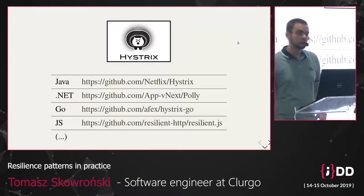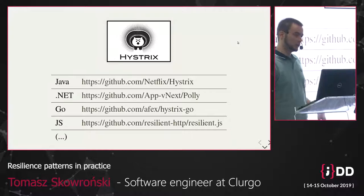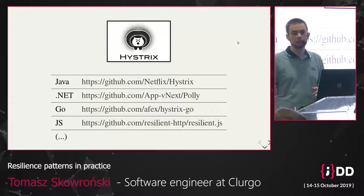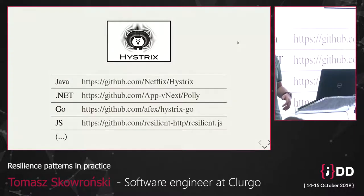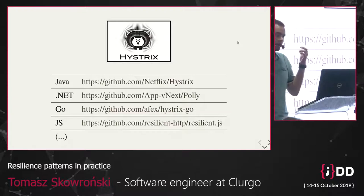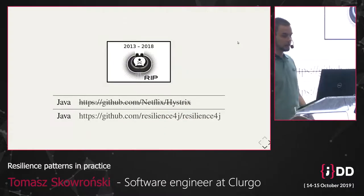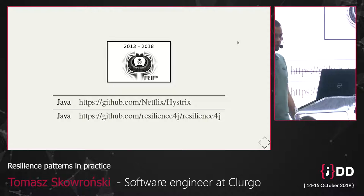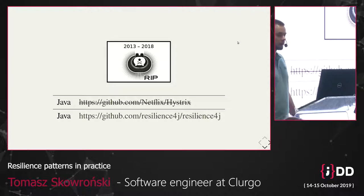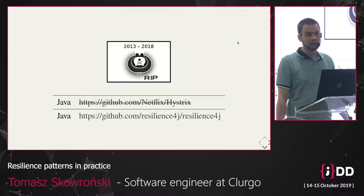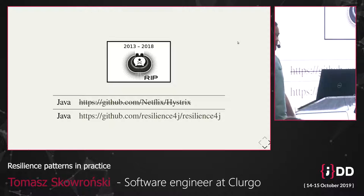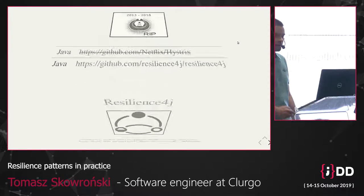We are at a Java conference, so my examples are prepared in Java — but not in Hystrix, because Hystrix is dead. It is no longer under active development; it is in maintenance mode, meaning only security patches will be applied. But there is no problem for us, because there is an official successor to Hystrix named Resilience4j.